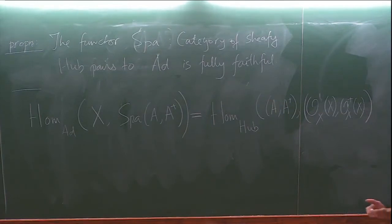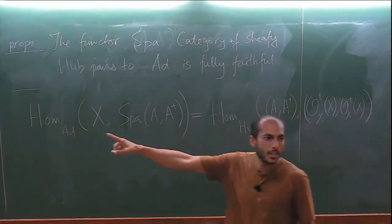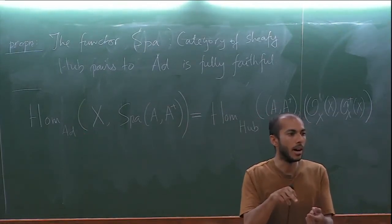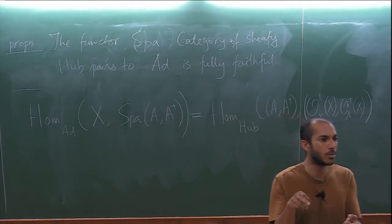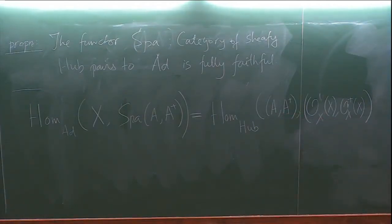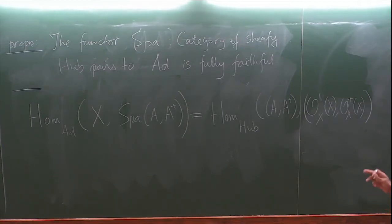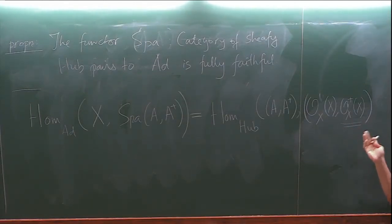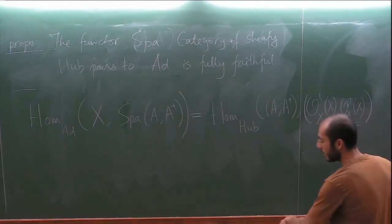We have not defined O_X^+, but the valuations will determine it: at the level of stalks, the valuation of a section of O_X^+ should be less than or equal to 1. There was a choice in the definition of an abstract adic space — you can give the data of O_X^+, or the data of valuations. Those two are equivalent, and the algebraic one was taken as the preferred choice.